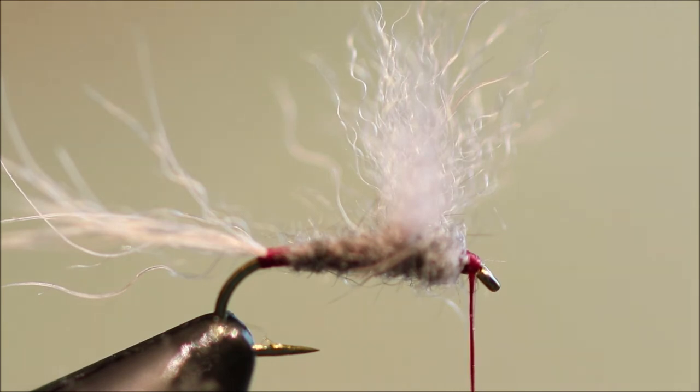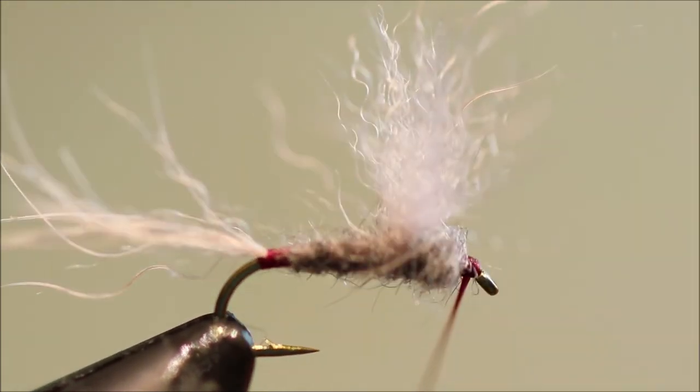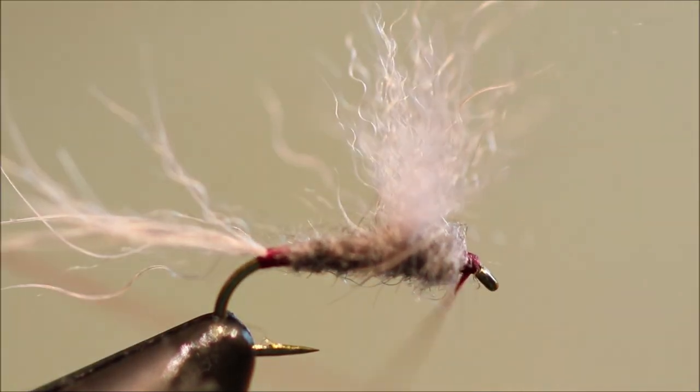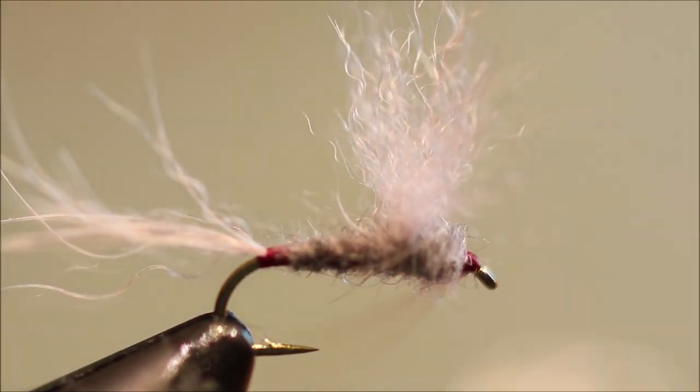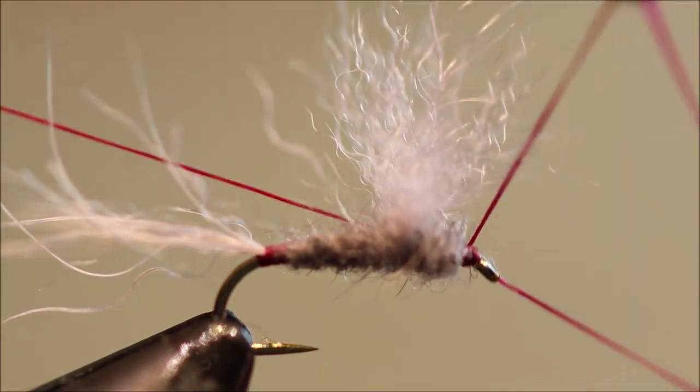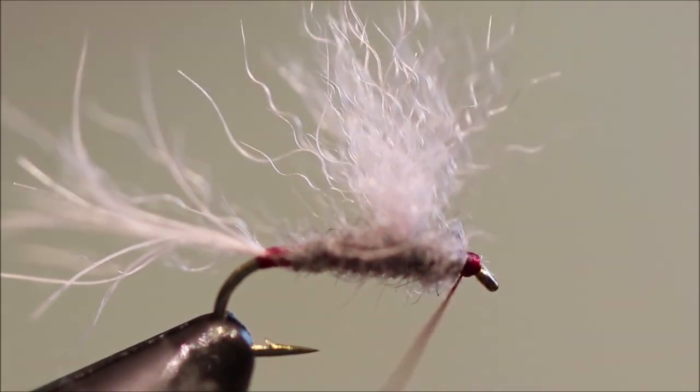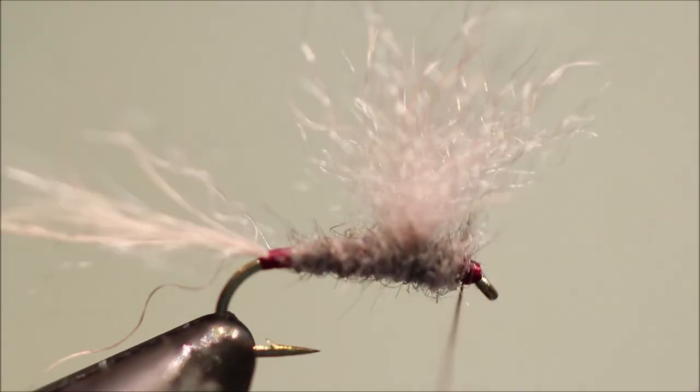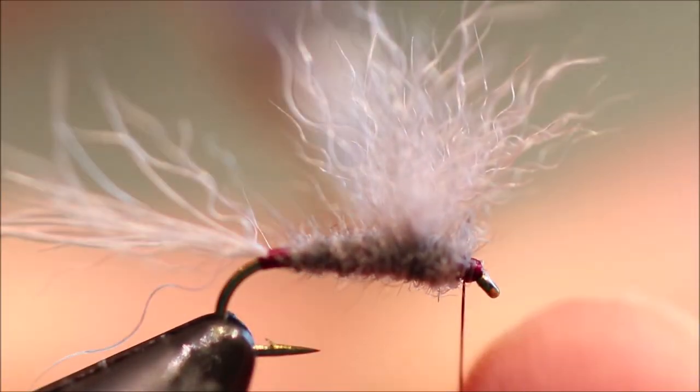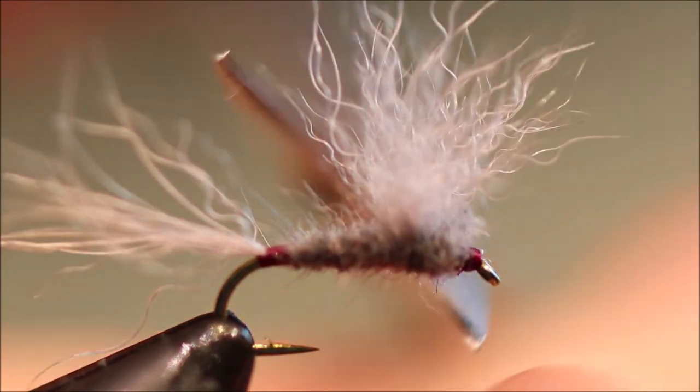And then, the last thing is just the whip finish and varnish. So I'll just sweep everything back out of the way and make my thread head. Three, four turns is plenty. Tighten it up. Pull your wing back up. Trim the bobbin away.